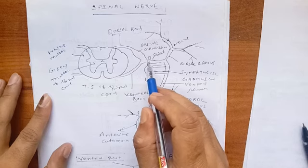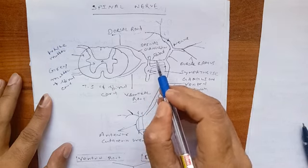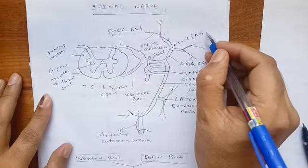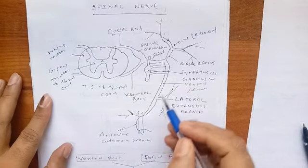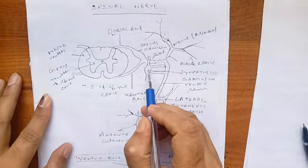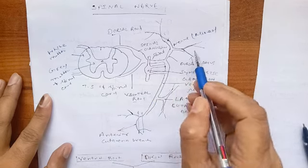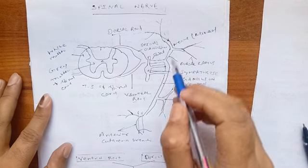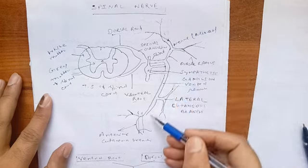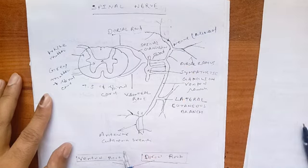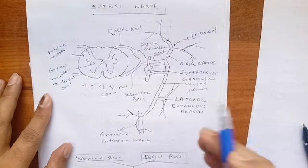Then the dorsal root and the ventral root join to form the trunk of the spinal nerve, which comes out from the intervertebral foramen. This spinal nerve is the mixed nerve and is further divided into the ventral ramus and dorsal ramus. Here is the sympathetic ganglion. The ventral ramus is longer than the dorsal ramus and further divides into branches such as the anterior cutaneous branch and the lateral cutaneous branch.